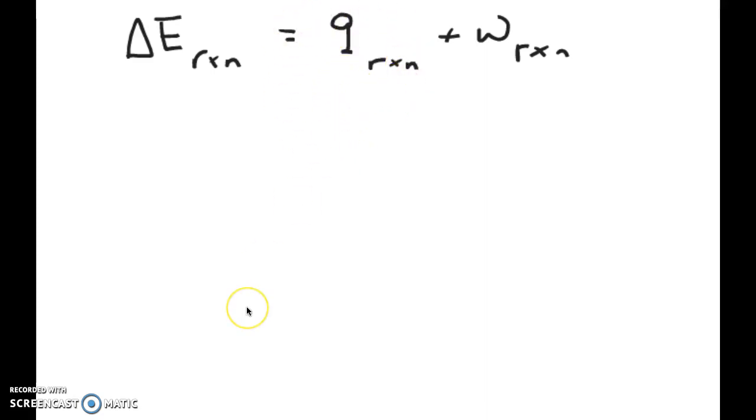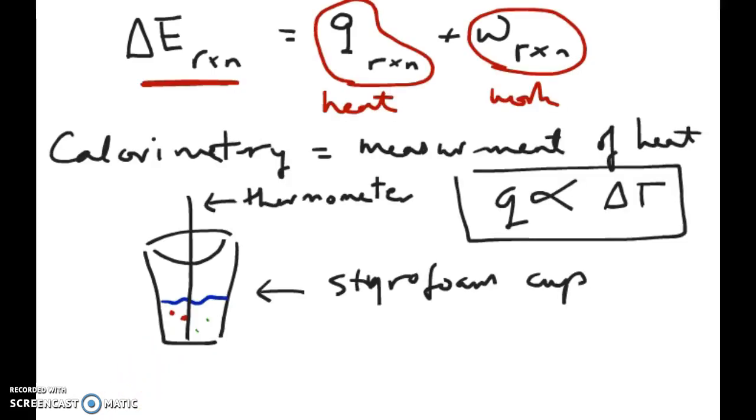That heat component could be measured using a calorimeter. There's a couple of different types of calorimeters that we discussed. The one that we're going to use today is something called the constant pressure calorimeter, which is basically just a styrofoam cup. You have two styrofoam cups stacked together. You put your reaction mixture inside one of those cups. You put the thermometer in there and the change in temperature that is a result of the reaction will then be correlated with the heat that's being exchanged by the reaction to its surroundings.